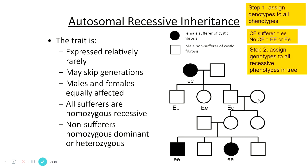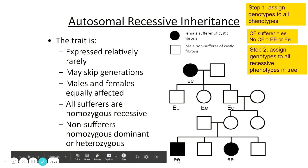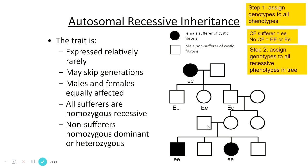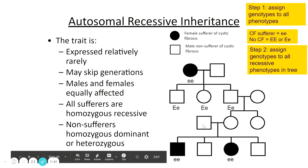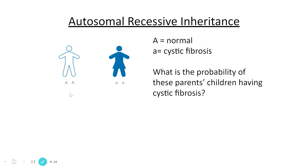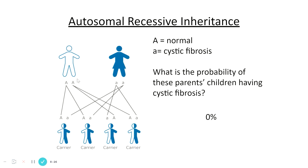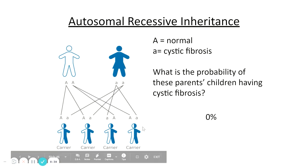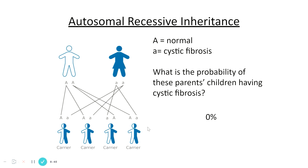Moving to the next group, we can backtrack: an affected male must have got one recessive allele from dad and one from mum, so both parents must carry the recessive allele. Since they're unaffected, they must also have a dominant allele. Another style of question asks: given the parental genotypes, what's the probability of having a child with cystic fibrosis? Complete a Punnett square — if one parent can only give a dominant allele, all children will be heterozygous and may carry the recessive allele, but their chance of having the condition is 0%.